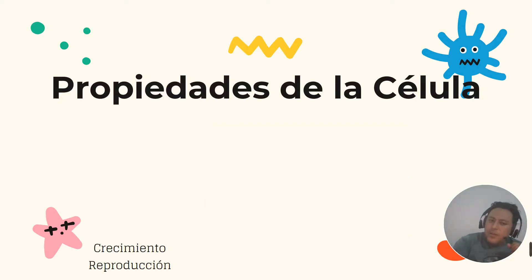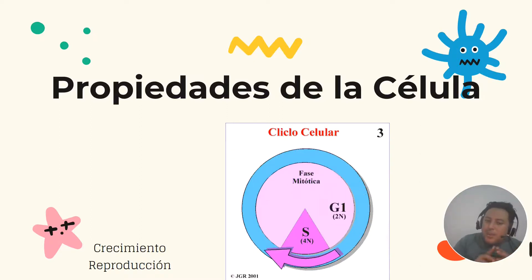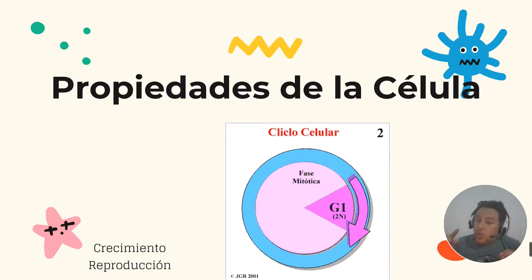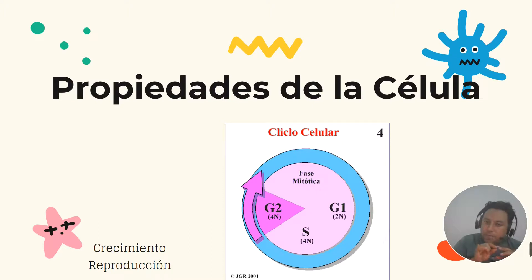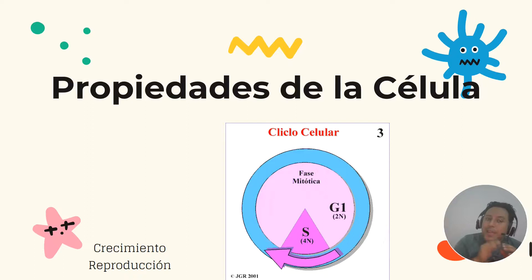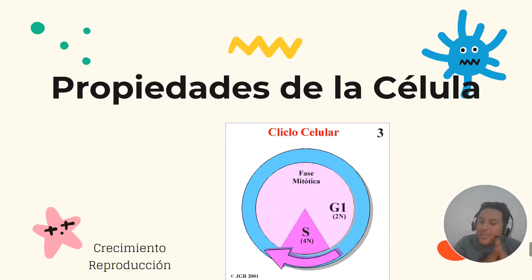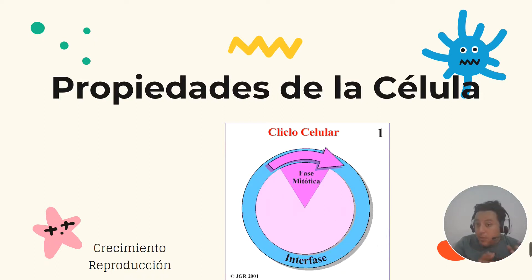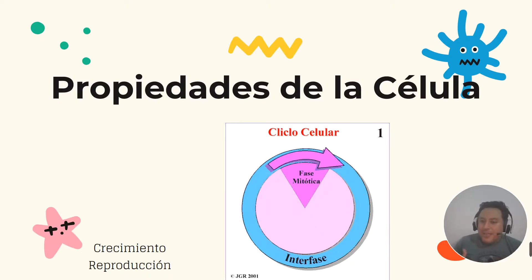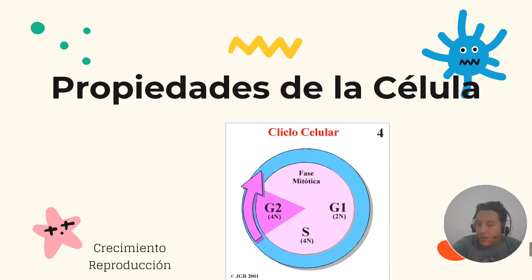Hablando de crecimiento y reproducción, también son propiedades de las células. El crecimiento no está relacionado directamente con el tamaño, sino con todo ese lapso de tiempo y procesos que lleva a la célula desde el momento que nace hasta que obtiene la capacidad de reproducirse. Y por último, la reproducción es la propiedad que tiene la célula de dividirse — hacer mitosis o meiosis — para generar dos o cuatro células hijas.